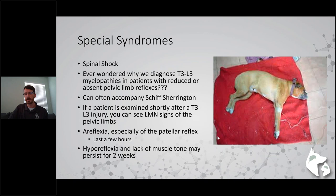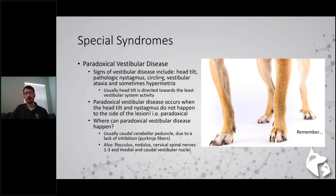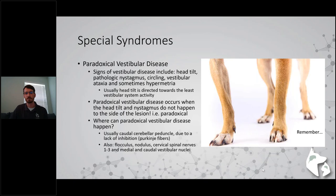Spinal shock: with a T3-L3 lesion, sometimes that lesion can be severe enough where we start to see loss of reflexes even though the L4-S3 spinal cord segment is normal. We term that spinal shock, and we see it in humans as well as animals. Paradoxical vestibular disease: sometimes the head tilt can be on the wrong side of where you're getting paw placement deficits. Remember that the legs don't lie - so if you have a dog tilting head to the left but has paw placement deficits on the right, the lesion is on the right side. The head tilt is going to the wrong side, and there are several pathological reasons that can happen.